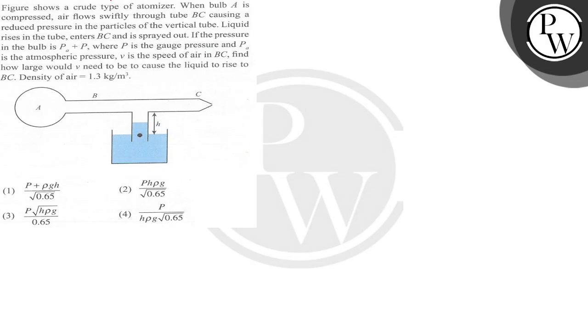Liquid rises in the tube, enters BC, and is spaced out. The pressure in the bulb is PA plus P, where PA is the gauge pressure and P the atmospheric pressure. With the speed of air in BC, find how large would we need to be to cause the liquid to rise to BC. The density of air is 1.3.